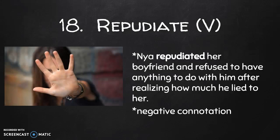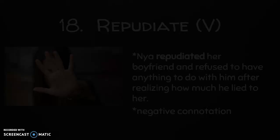Number eighteen is repudiate, which is a verb. Repudiate means to refuse to have anything to do with, to disown, to reject, or to deny the validity of. You can repudiate people, reject ideas, or deny that something is valid. The example sentence is: Naya repudiated her boyfriend and refused to have anything to do with him after realizing how much he lied to her. This is definitely something with a negative connotation.